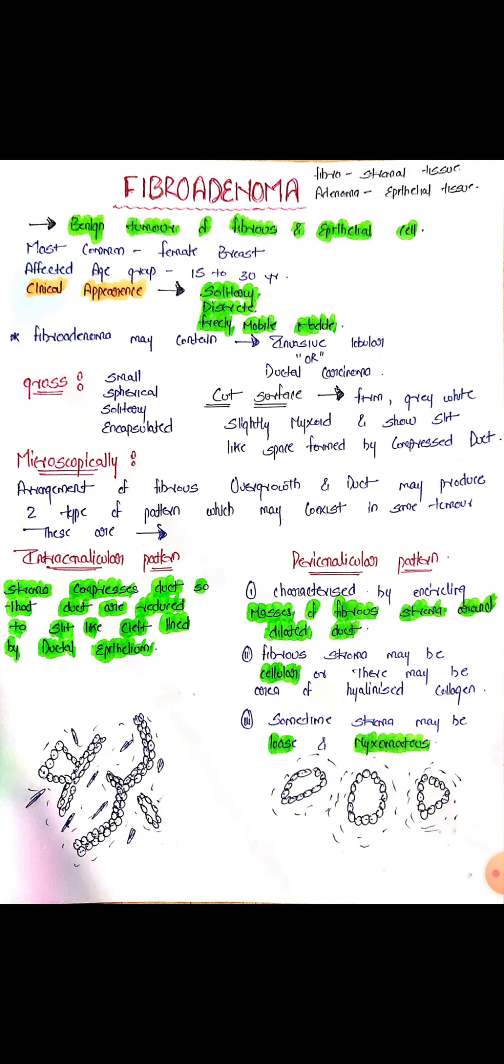Now we will discuss pathology. First of all, in gross examination what do we see? Small, spherical, solitary, encapsulated.